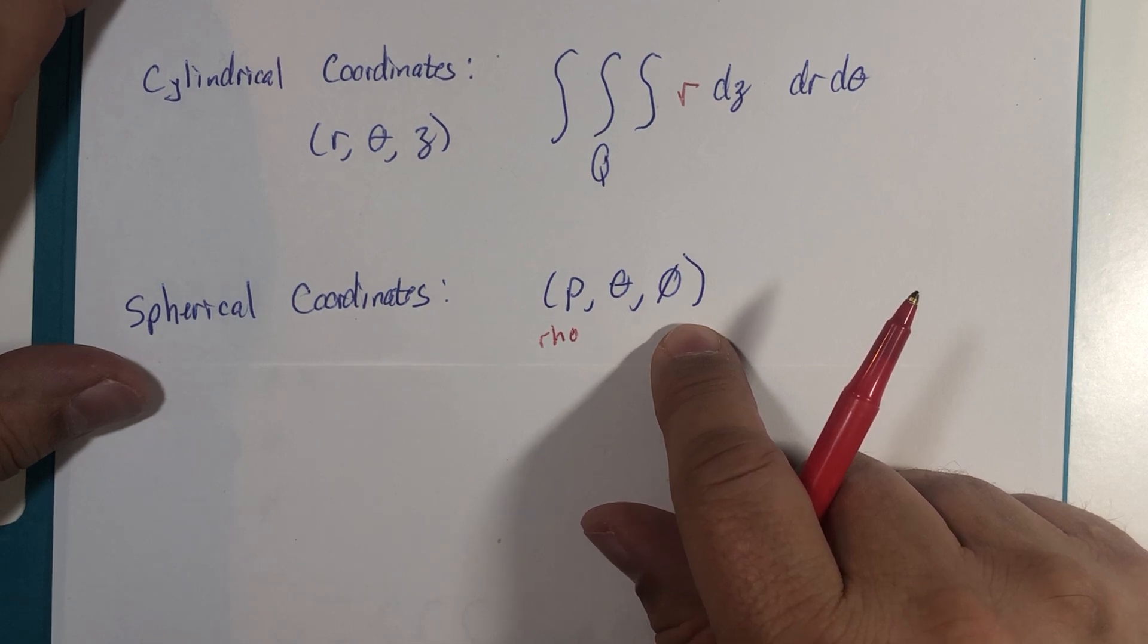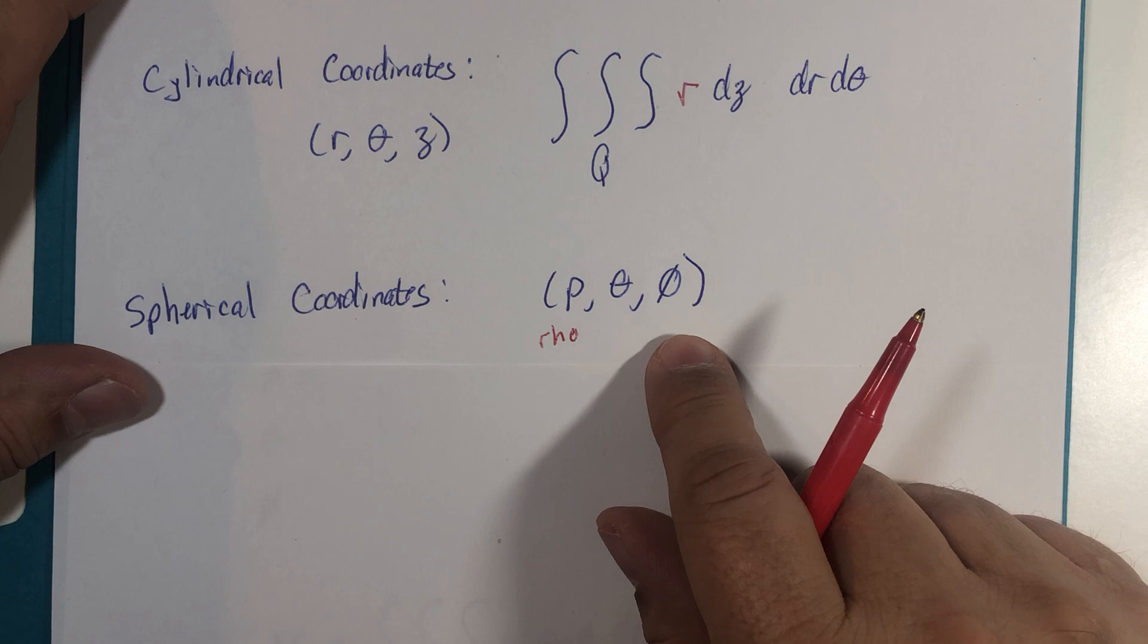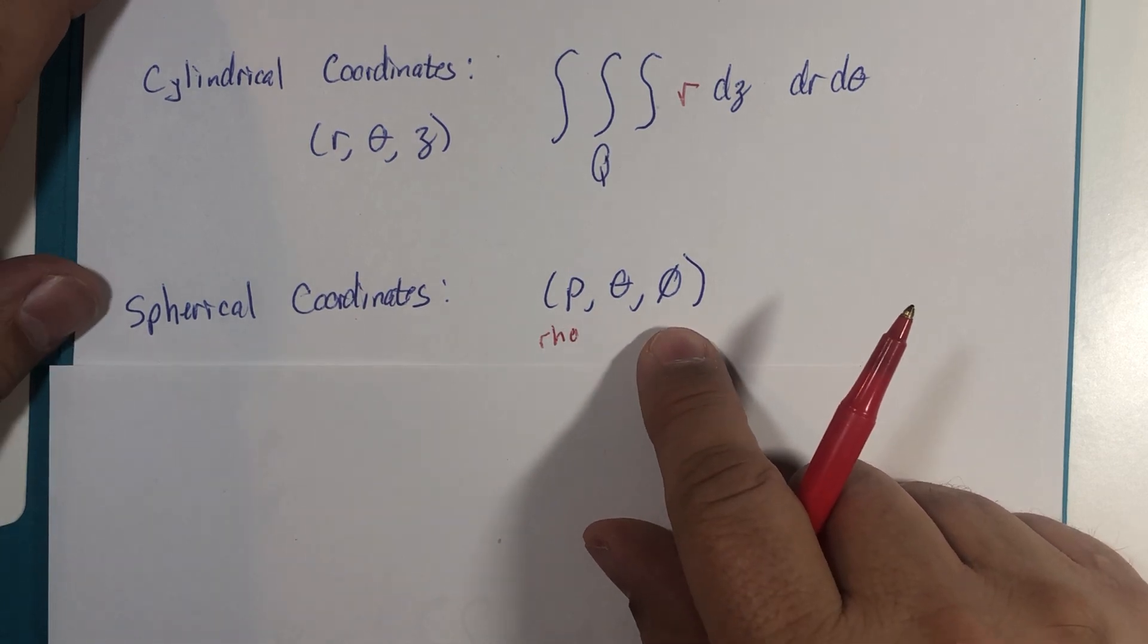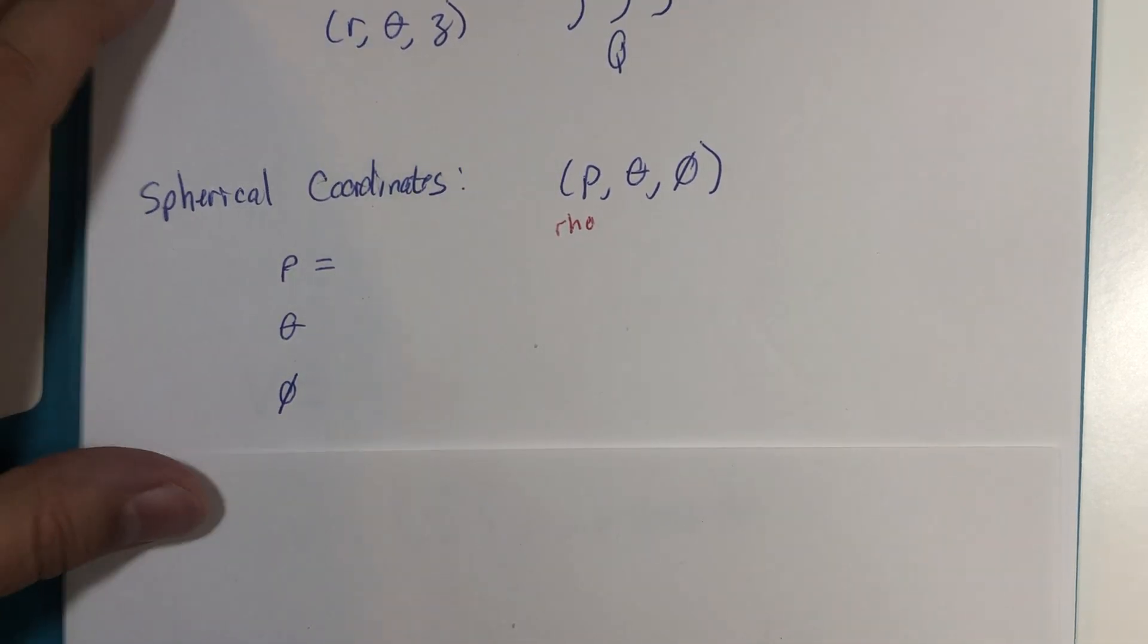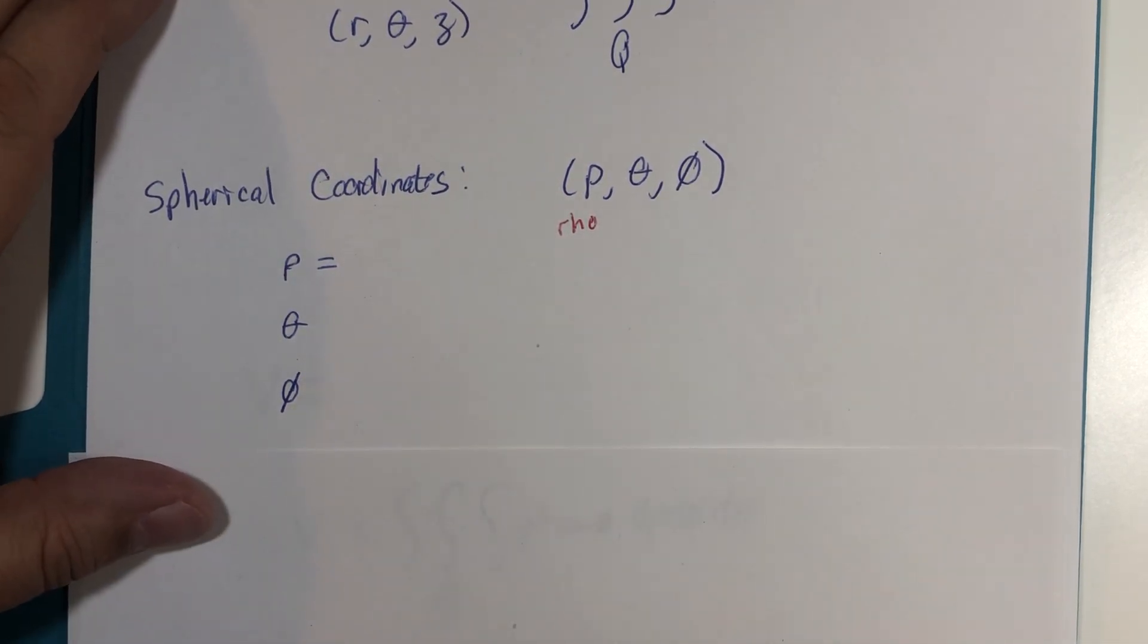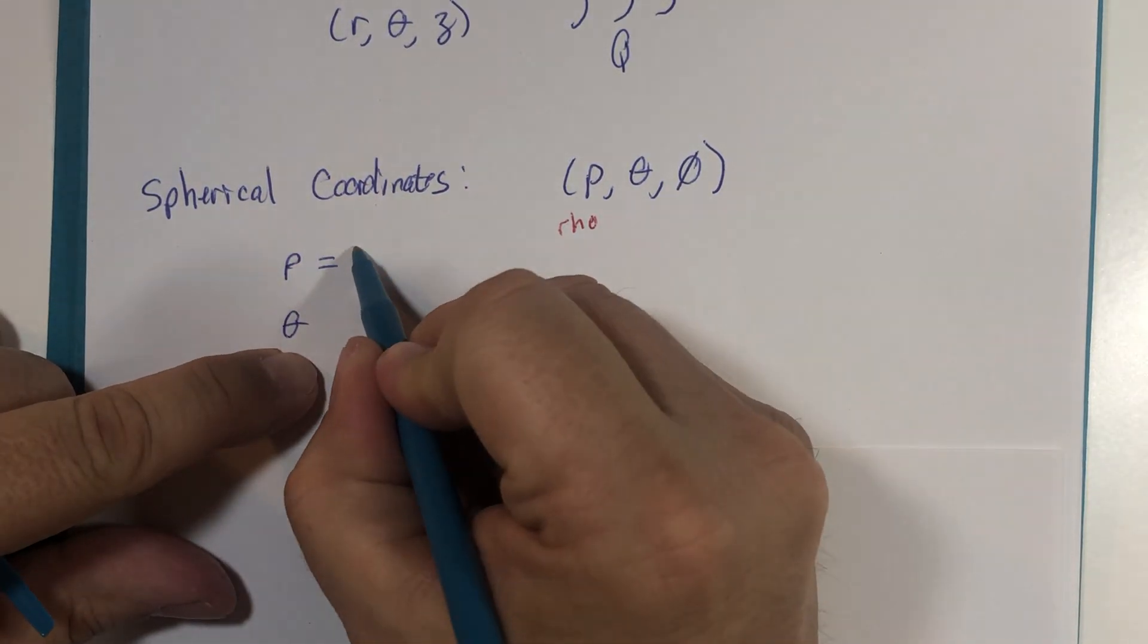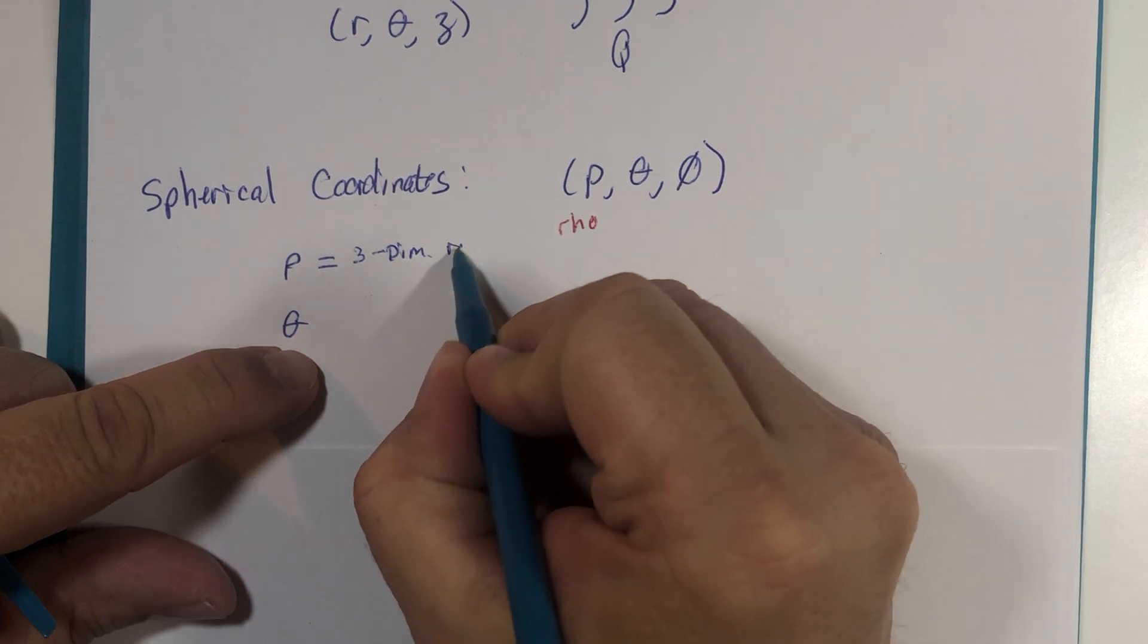Depending on how it is in the Greek written language, it has both pronunciations, so I won't get into a debate on that. Rho, theta, and phi – when we look at these coordinates, rho is definitely our three-dimensional radius.